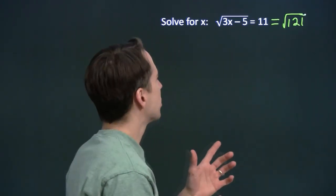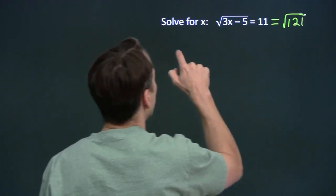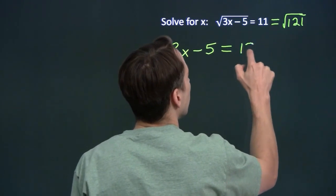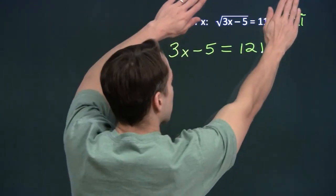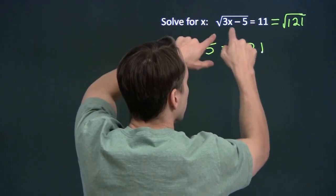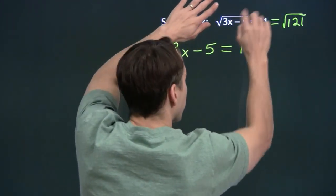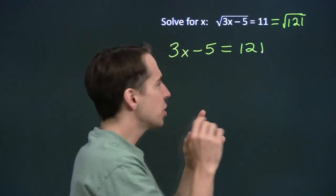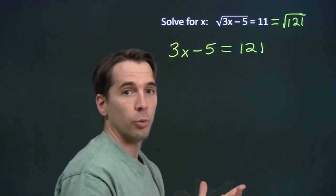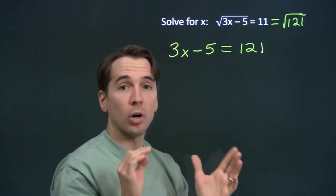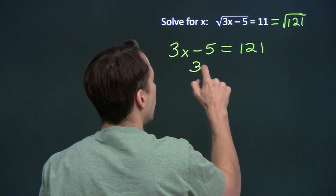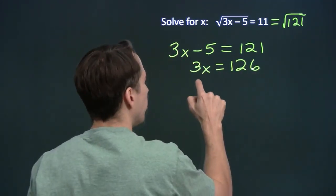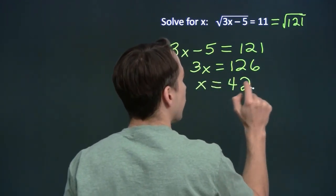Another way to think about this: 11 is the square root of 121, and 121 is 11 squared, so 3x minus 5 must equal 121. We can also think of this as squaring both sides of the equation: squaring the square root of 3x minus 5 gives us 3x minus 5 — as long as 3x minus 5 is not negative, which we'll check at the end — and squaring 11 gives us 121. This gives us an equation we know how to solve. Adding 5 to both sides and dividing both sides by 3, we get x equals 42.